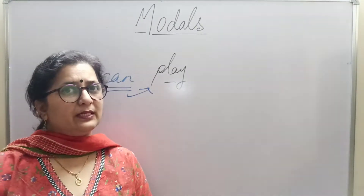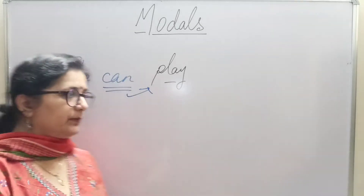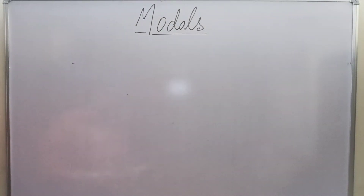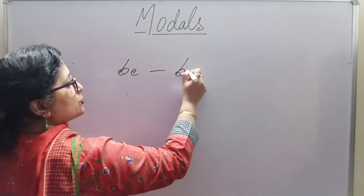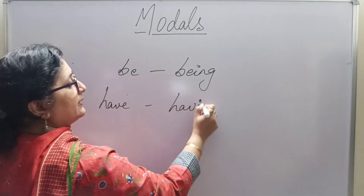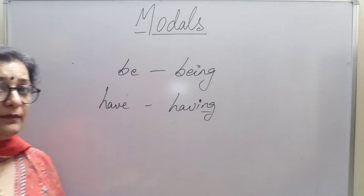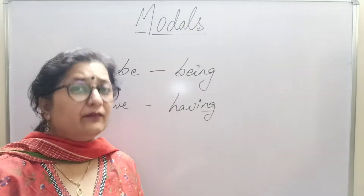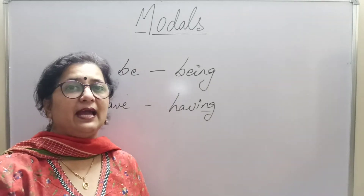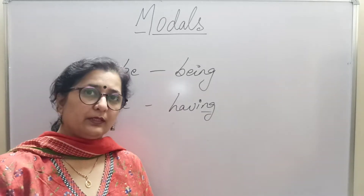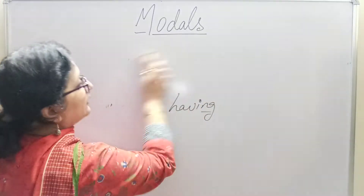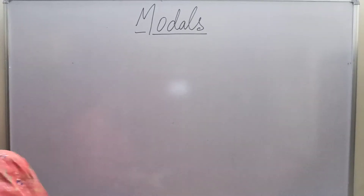Now, what is the difference between a modal auxiliary verb and just an auxiliary verb? Suppose words like 'be' — 'be' can change to 'being.' Or take 'have' — an '-ing,' '-es,' or '-ed' can be added to it. But in case of modals, nothing can be added. No letters can be added to the modal itself. The word itself is complete — you cannot add anything to a modal. So a modal is actually a modal auxiliary verb or helping verb.